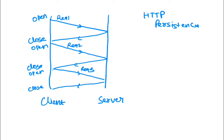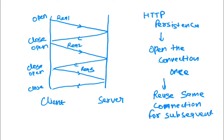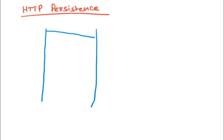HTTP persistence is a concept in which you open the connection once and reuse the same connection for subsequent requests. When you reuse the same connection, the handshake mechanism does not happen for subsequent requests. With HTTP persistence enabled, the client sends the first request, opens a new connection, and the server returns the response.